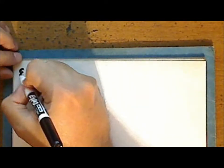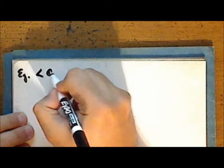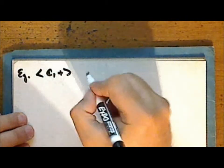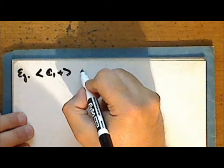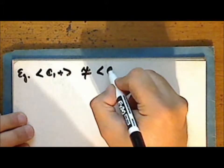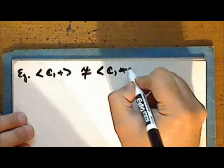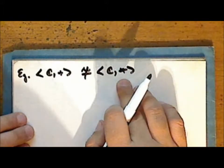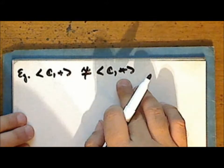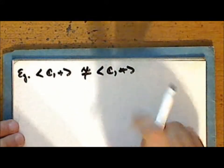In the next example, we will show that the complex numbers with addition as a structure is not isomorphic to the set of complex numbers with the operation star, where star gives the product of a complex number with the conjugate of the second.